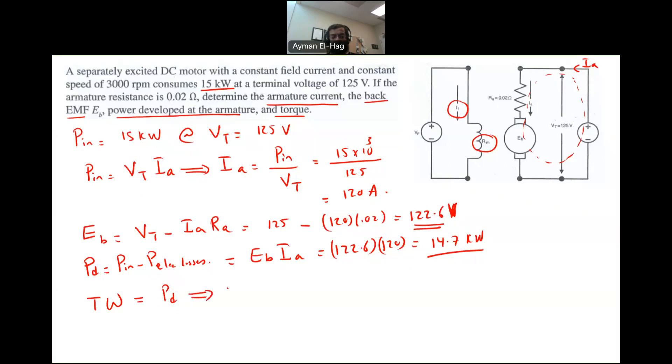So from this, your torque is equal to P developed divided by omega. Now, we know P developed, which is 14.7 times 10 to the power of 3 divided by omega. Now, what we know, we know the speed in RPM, 3,000.